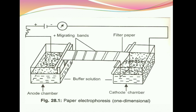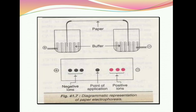As you can see in this picture, we have two chambers with a buffer placed in each. We have a Whatman filter paper whose ends on both sides will dip in the buffer. In the center, we place our protein or amino acids — this is the point of application. The sample is placed in the center and will migrate according to its charge.